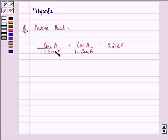The question says prove that cos A upon 1 minus sin A plus cos A upon 1 plus sin A is equal to 2 sec A.